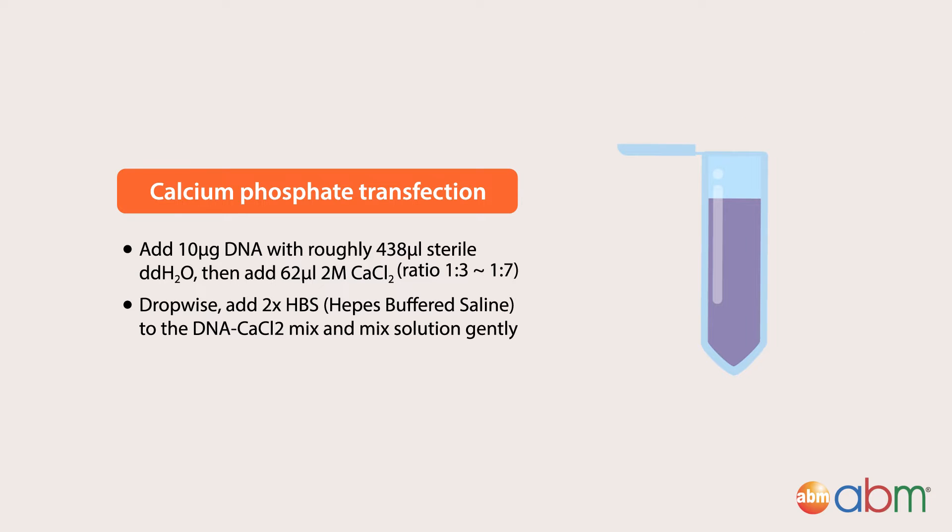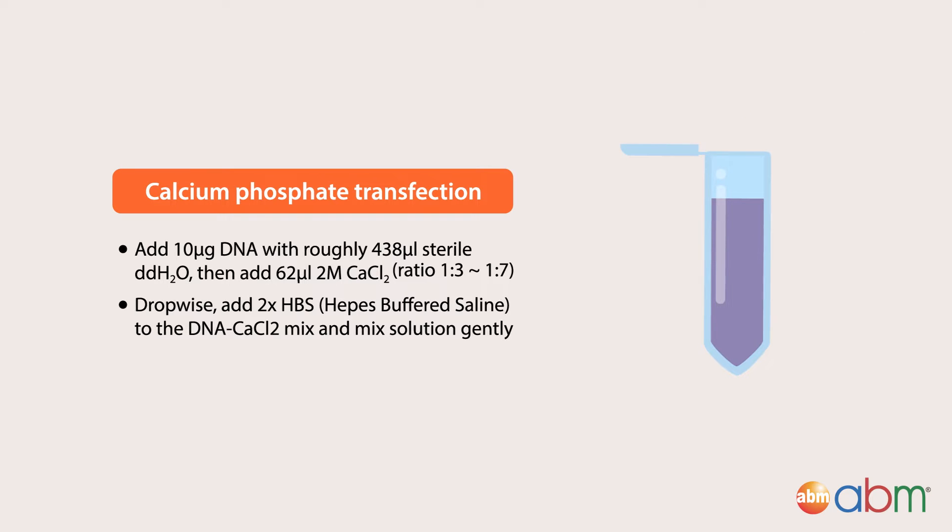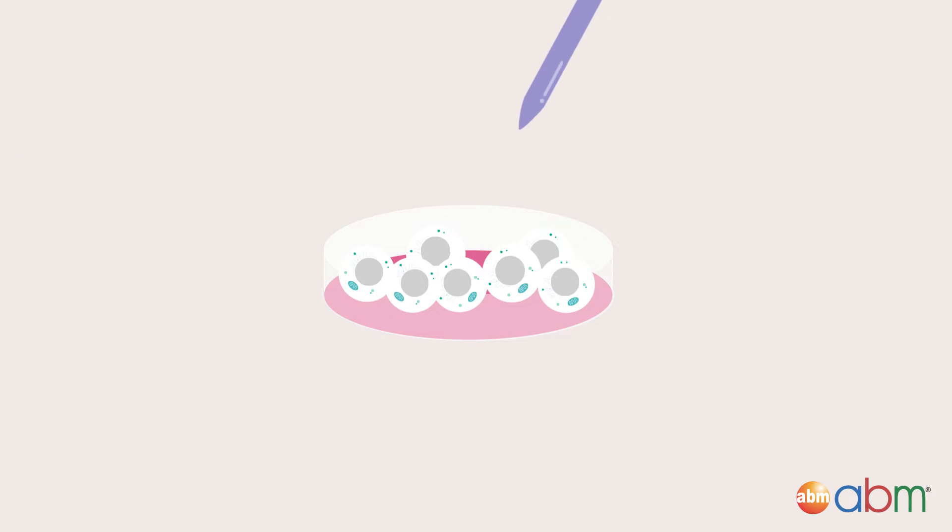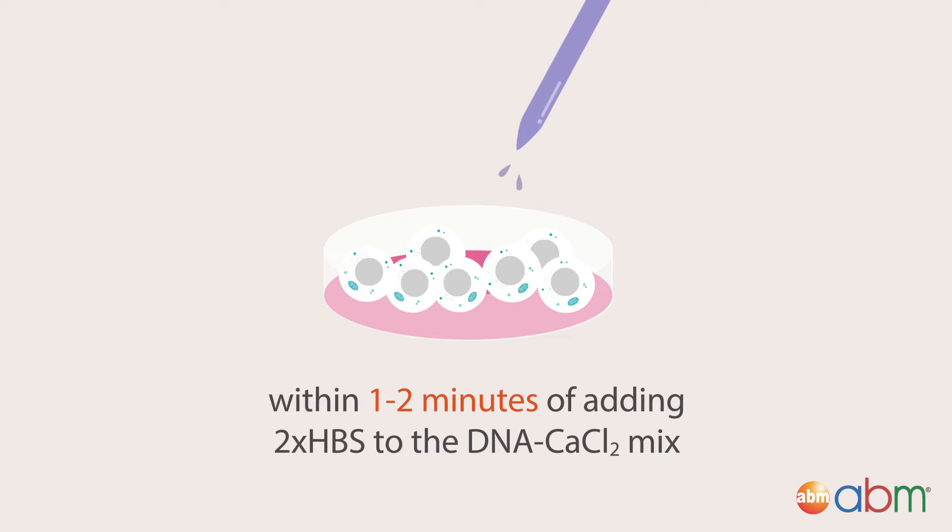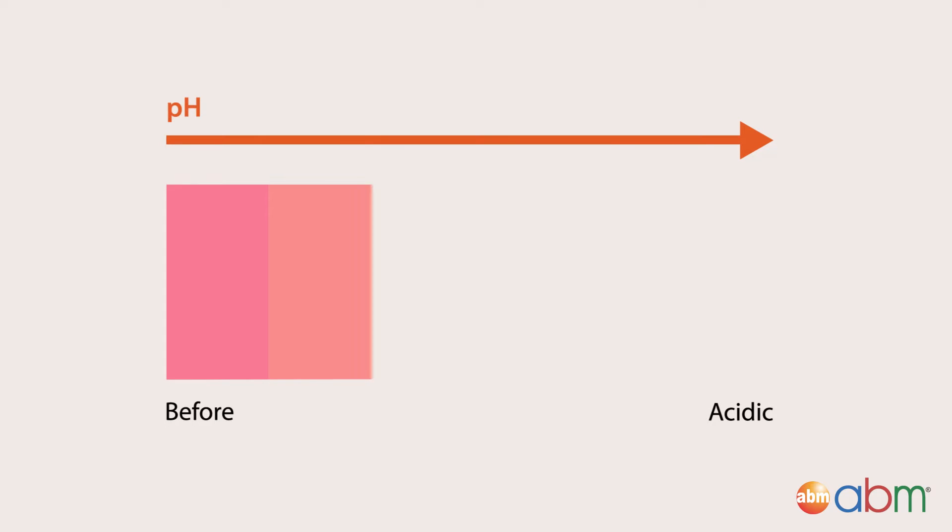Make solution gently. Directly add the contents of the Eppendorf dropwise evenly throughout the cultured vessel to the medium of the cells within 1 to 2 minutes of adding the 2X HBS to the DNA-calcium chloride mix. The pH medium will become more acidic; with presence of phenol red, the media should turn pink to orange.